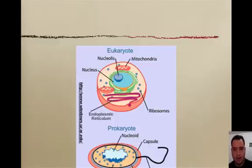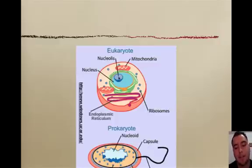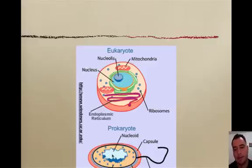Again, eukaryote versus prokaryote — remember that eukaryotes have a nucleus and membrane-bound organelles. Prokaryotes don't have a nucleus; they just have their DNA, which is circular and all over the place.